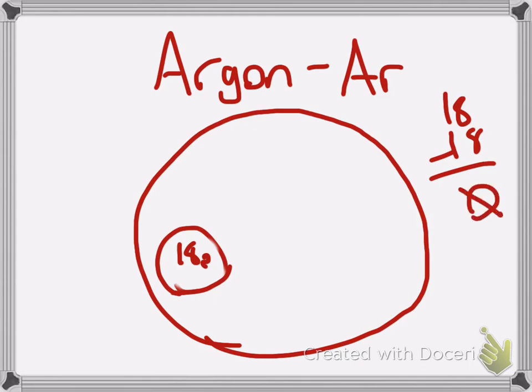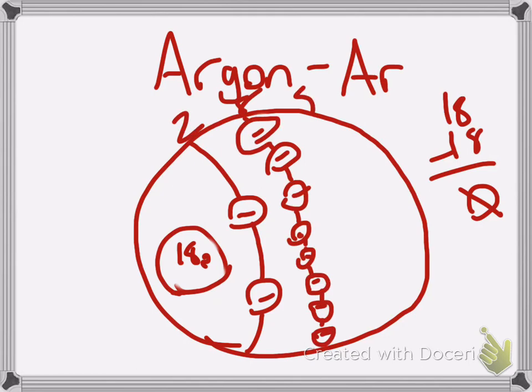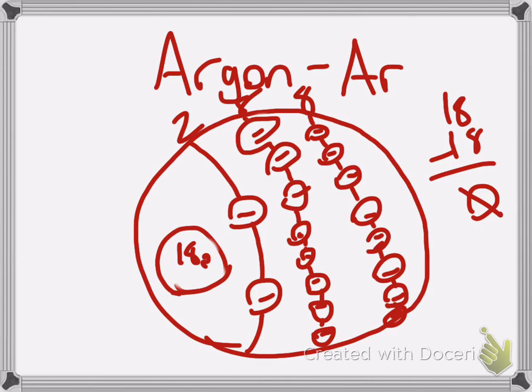Now we're going to draw the energy levels. The first energy level can only hold 2 electrons, the second energy level can hold 8 electrons, and the third energy level can also hold 8 electrons. So now we have all the energy levels made for an argon atom.